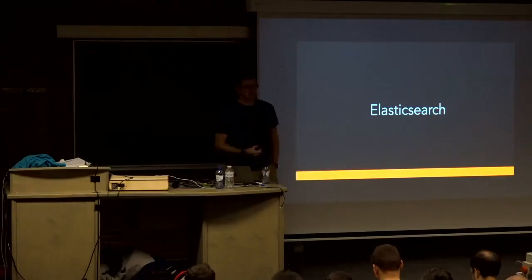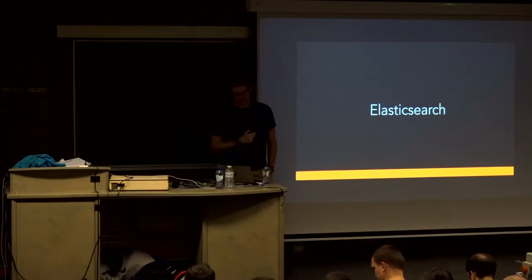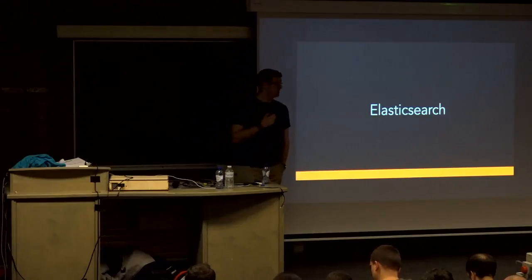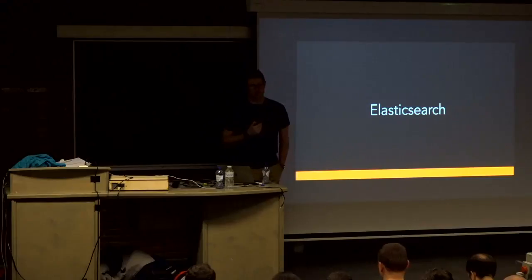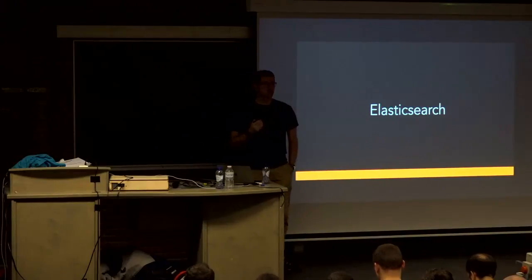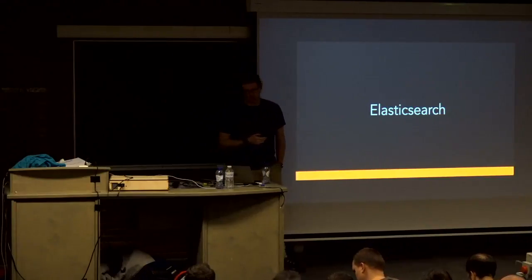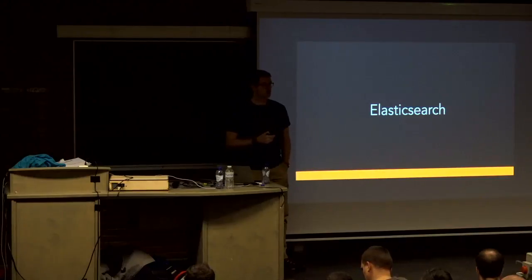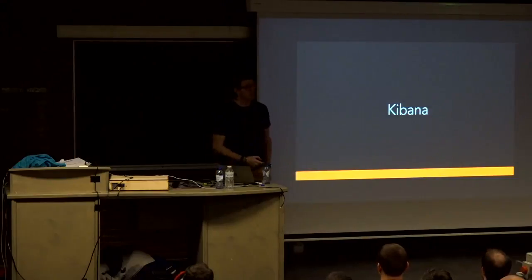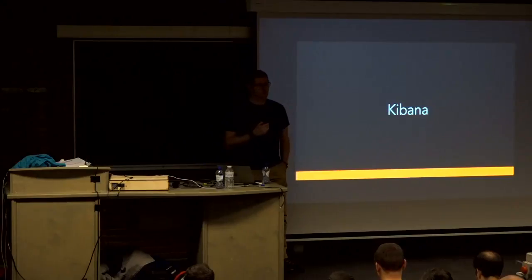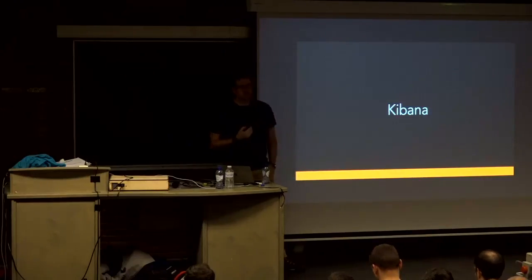Most people send Logstash output to Elasticsearch. Elasticsearch is a document-based search engine with great full-text search capabilities — ideal for log messages — and great at aggregations like building histograms. There's not much more to say: install it, run it, and it stores your documents for you to search later. And finally, Kibana — your search interface. It's a quick way to query Elasticsearch, build dashboards and visualizations. It's actually kind of hard to explain, so the easiest way is just to show you Kibana.